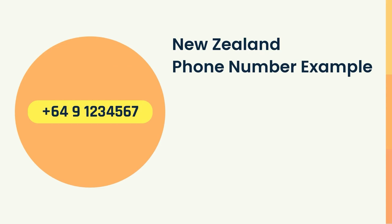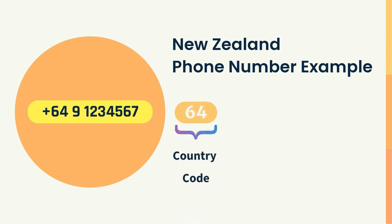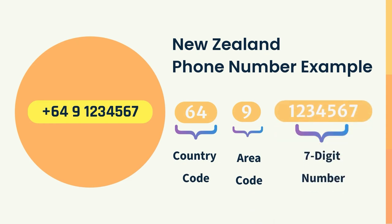In this example, +64 is the country code for New Zealand. 9 is the single-digit area code corresponding to the Auckland region. 1234567 represents the 7-digit phone number unique to a specific individual or business.